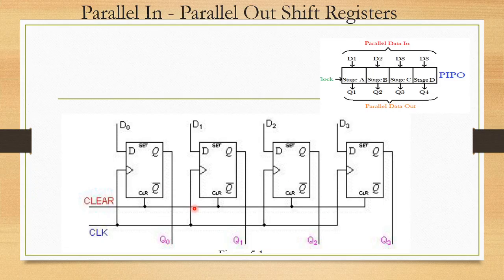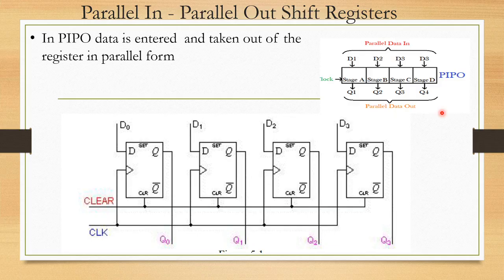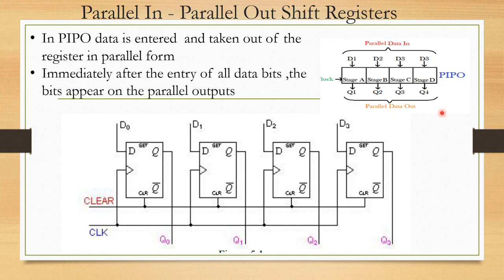Now we have Parallel In Parallel Out (PIPO) shift register. In PIPO, parallel data goes into 4 storage spaces in parallel. Data is entered and taken out of the register in parallel form. Immediately after the entry of all data bits, the bits appear on the parallel outputs. All data bits D0, D1, D2, D3 are entered in parallel and the outputs are also available in parallel. The circuit uses 4 flip-flops with a clear input.